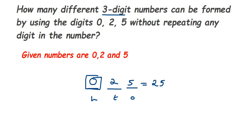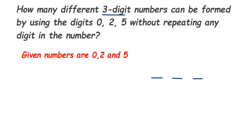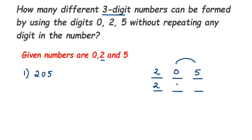Let me form the three-digit numbers. First, I cannot take zero at the start, so I'll begin with 2. Taking 2 first, then 0, then 5 — the first number is 205. For the second number, I keep 2 in the hundreds place and interchange 0 and 5, giving 250.